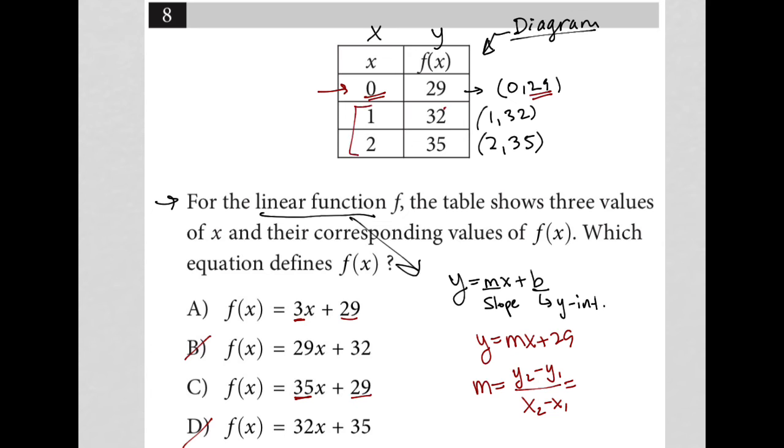So I'm going to use these two points where this is my x1 and this is my y1. This is my x2 and this is my y2. So y2 would be 35 minus y1 is 32 and x2 is 2 minus x1 is 1.